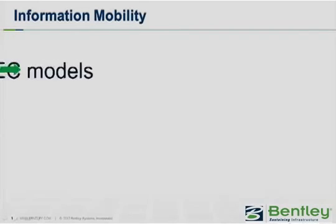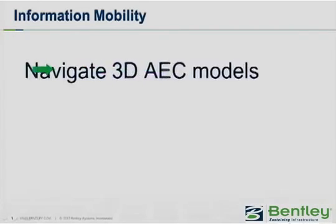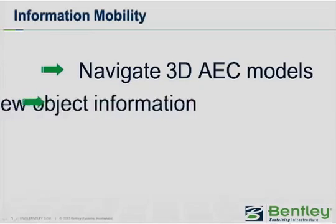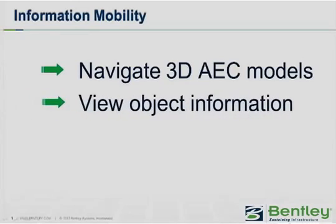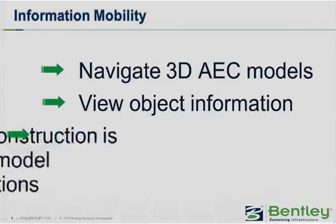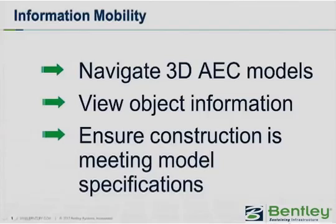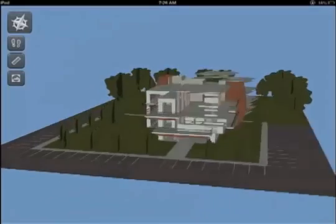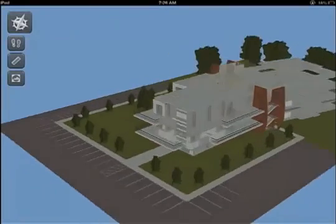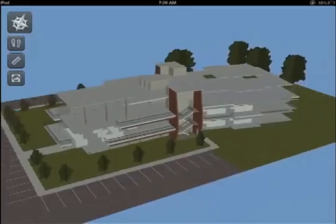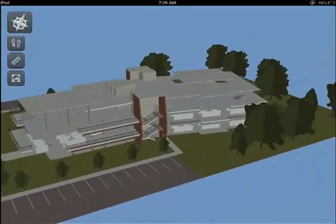Navigator Mobile provides powerful review capabilities to intuitively navigate 3D AEC models and documents, and view relevant object information to ensure construction is meeting model specifications. Navigator Mobile utilizes next-generation iModels, which can include content from virtually any common AEC design application.